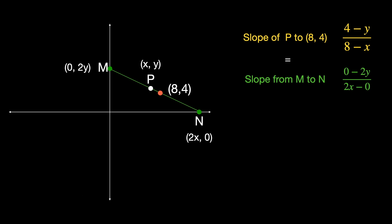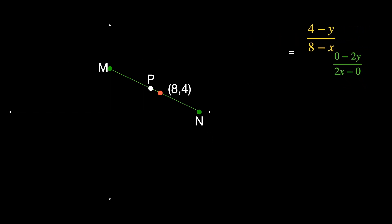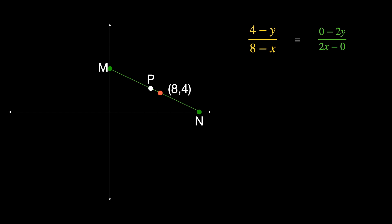When trying to find the locus of a point, try to find out what does not change. We equate (4 − Y) / (8 − X) with (0 − 2Y) / (2X − 0), then cross-multiply and simplify to get the final answer: XY − 2X − 4Y = 0.